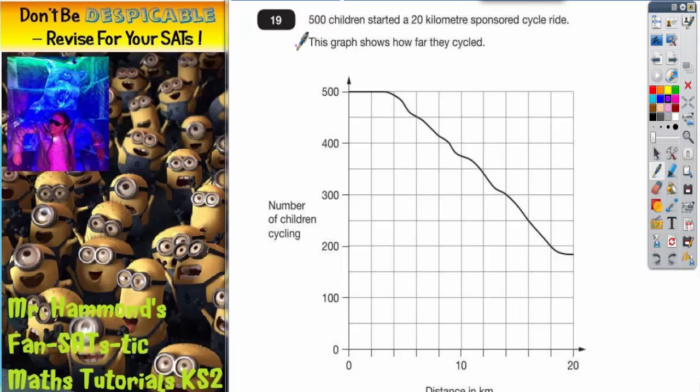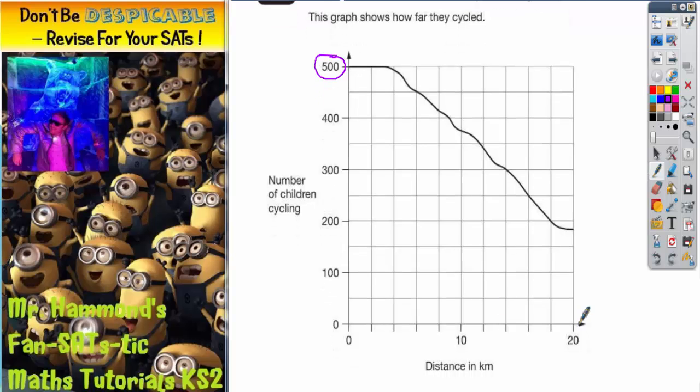Okay, question 19 is a question with a graph and it says 500 children started a 20 kilometer sponsored cycle ride. This graph shows how far they cycled. So we've got 500 children, so here on the y-axis, 500, the number of children, and 20 kilometers is the distance. So down here on the x-axis we've got our distance, 20 kilometers down here.